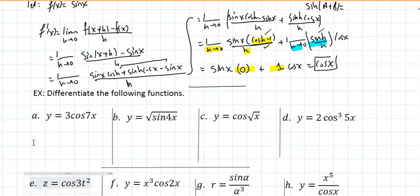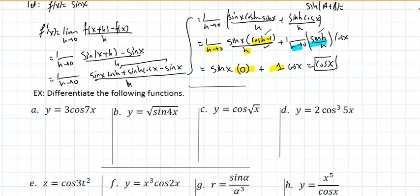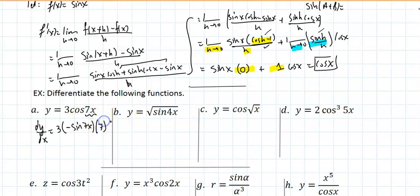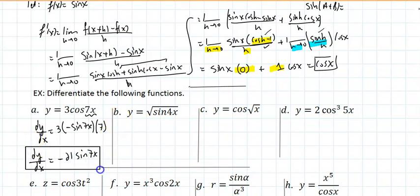Our examples are straightforward. The way I remember it: whenever you take a derivative of the cosine, or any co-function (cosecant, cotangent), you pick up a negative. So for example (a), dy/dx = -3sin(7x) times the derivative of 7x by the chain rule. Remember: you apply the chain rule on every single derivative you will ever take, no exceptions.